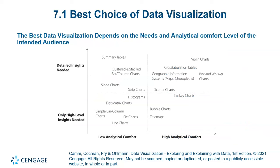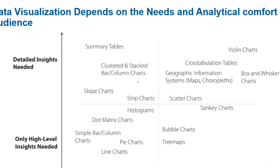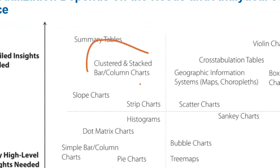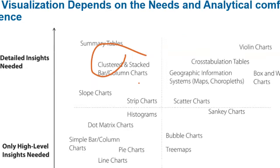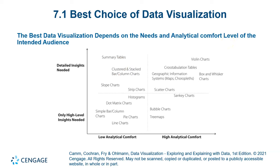Comparing charts with respect to insight level and analytical comfort: some charts are suited to detail insight with low analytical comfort. For detail insight with high analytical comfort, the violin chart is the best choice. For high-level insight with high analytical comfort, Sankey charts, bubble charts, or treemaps are best. For high-level insight with low analytical comfort, normal charts like pie charts and line charts are most appropriate.